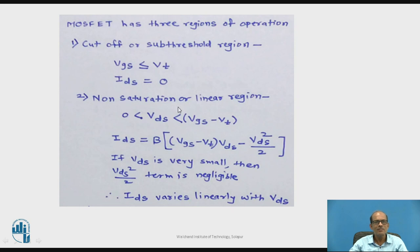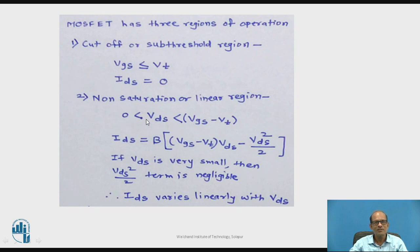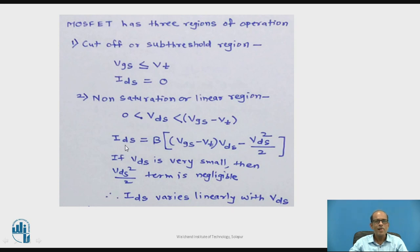The second region is the non-saturation or linear region, where VDS is greater than 0 and less than VGS minus VT, and VGS is greater than VT. For this non-saturation or linear region, the drain-to-source current ID is given by: ID = beta × [(VGS − VT) × VDS − VDS²/2]. This is the design equation for IDS in the linear region.